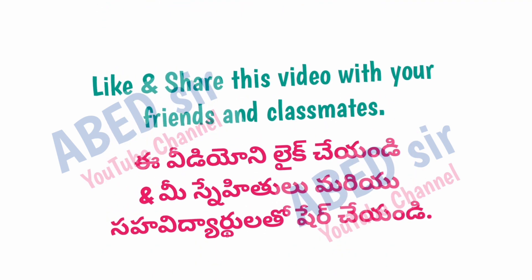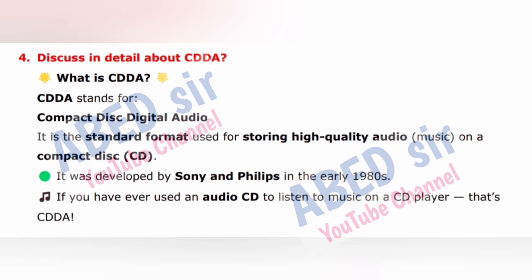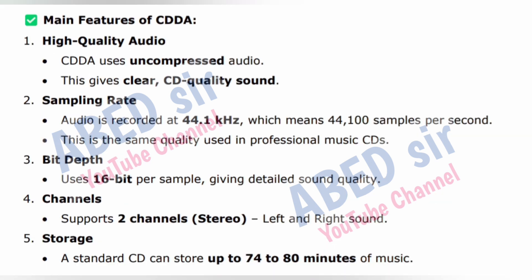Next important long question: Discuss in detail about CDDA. CDDA stands for Compact Disc Digital Audio. It is the standard format used for storing high-quality audio (music) on a compact disc (CD). It was developed by Sony and Philips in the early 1980s. If you have ever used an audio CD to listen to music on a CD player, that's CDDA. Main features: high-quality audio — CDDA uses uncompressed audio giving clear CD-quality sound; sampling rate — audio is recorded at 44.1 kHz, meaning 44,100 samples per second, the same quality used in professional music CDs.